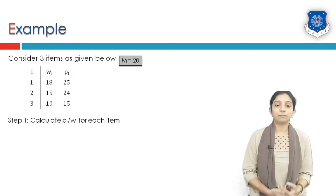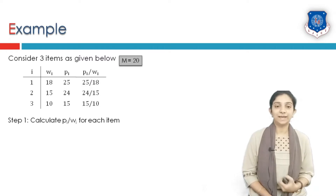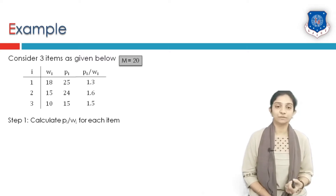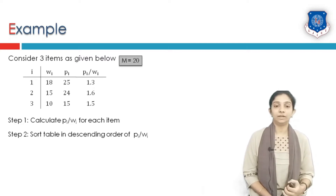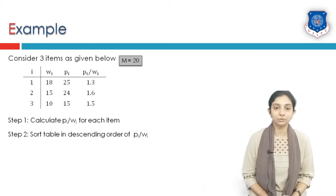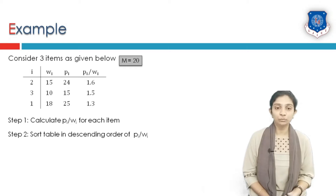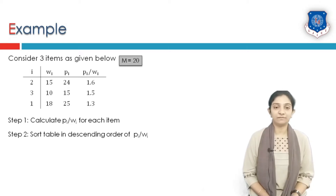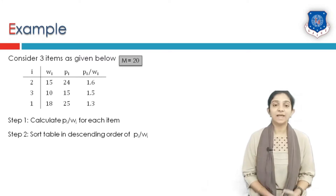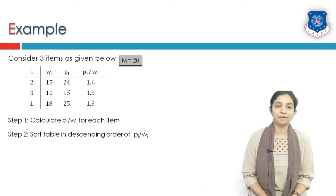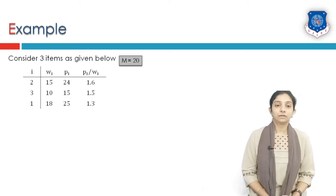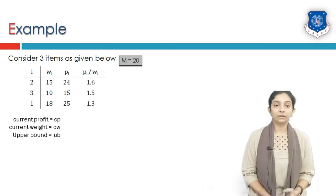The first step is to calculate the profit-by-weight ratio (pi/wi) of each item. We calculate 25/18, 24/15, and 15/10, giving respective ratios of 1.3, 1.6, and 1.5. The second step is to sort the table in descending order of profit-by-weight ratio. So item 2 (ratio 1.6) comes first, then item 3 (ratio 1.5), then item 1 (ratio 1.3).